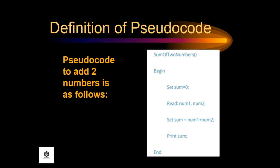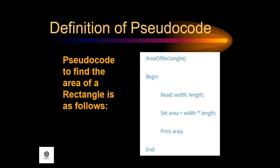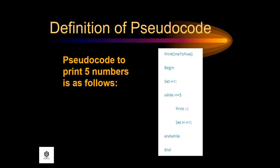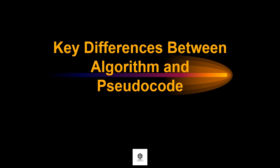So here are some examples of pseudocode. First, pseudocode to add two numbers is as follows. Next example is pseudocode to find the area of a rectangle. Another example is pseudocode of sequential flow with multiple alternatives. And pseudocode to print five numbers is as follows.